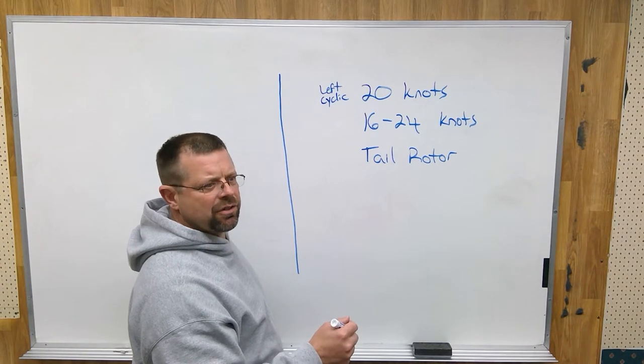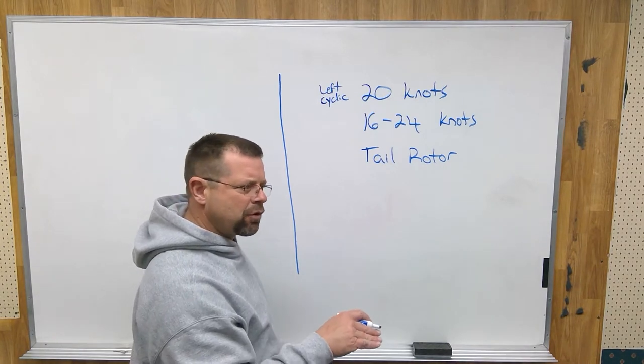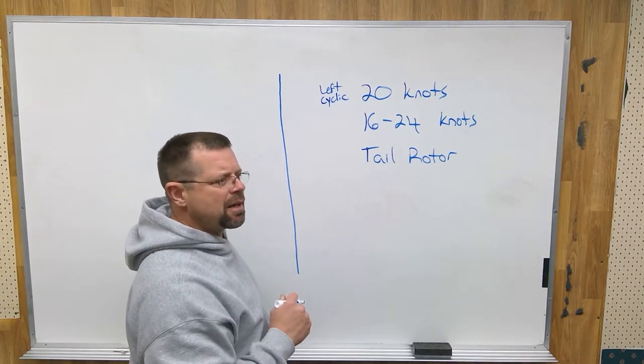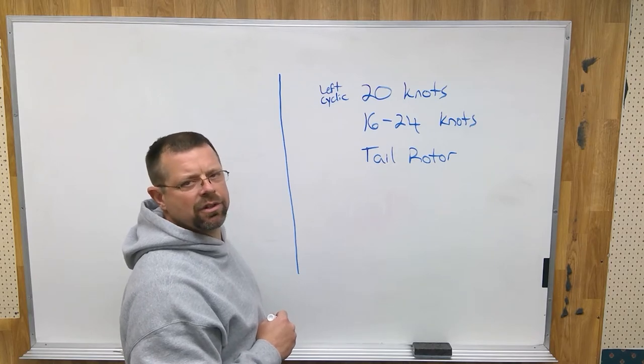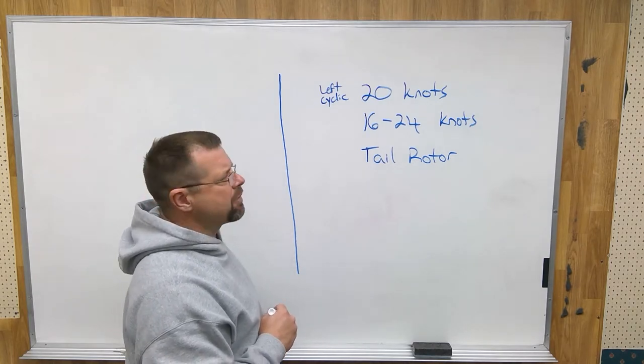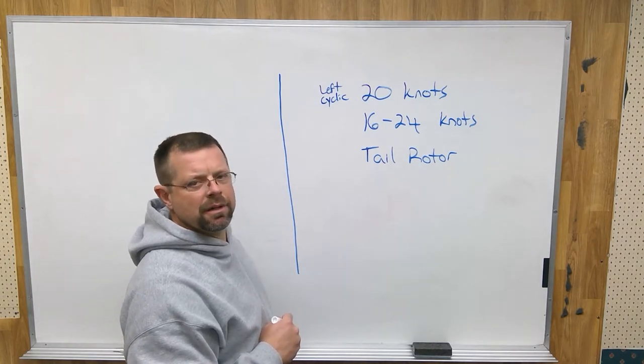Forward on the cyclic slightly to keep the helicopter low to the runway and stay out of the shaded area of the height velocity diagram. Height velocity diagram will be another video.